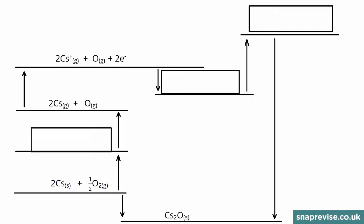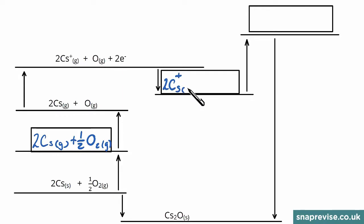You get marks for atomising either element first. Here we'll do caesium first: we start with two caesium solids and after this step we have two gaseous caesium atoms, while oxygen stays as it is. Moving round the cycle, two electrons are stripped from the caesium atoms in the first ionisation energy of caesium for both atoms. In the next step we give one of these electrons to oxygen in the first electron affinity, so we end up with two Cs⁺ gaseous ions, one O⁻ gaseous ion, and one electron left over.